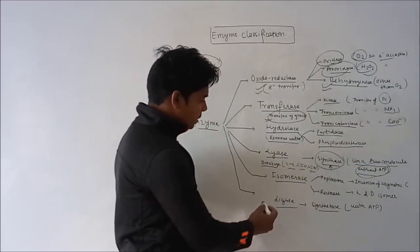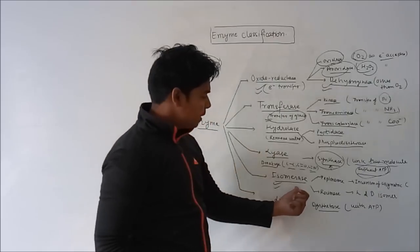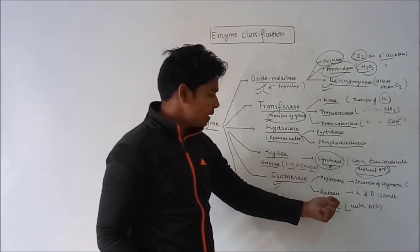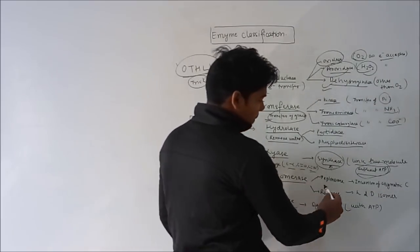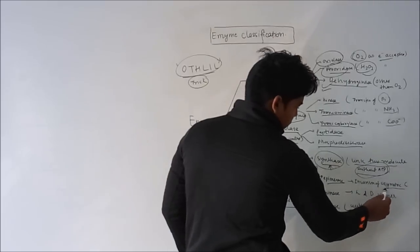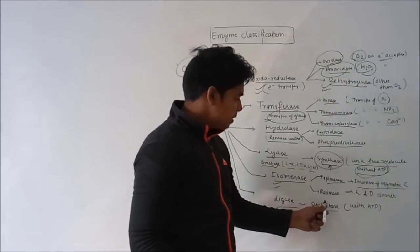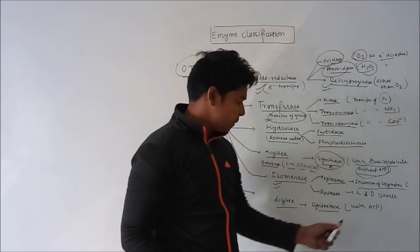The fifth classification is isomerase. The example of isomerase is epimerase and racemase. They do the inversion of asymmetric carbon, and the racemase does the L-D isomer transformation.